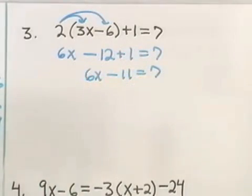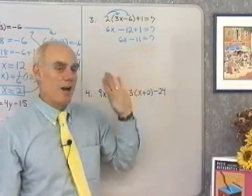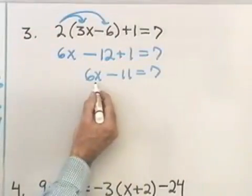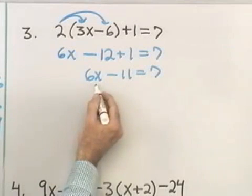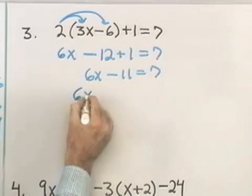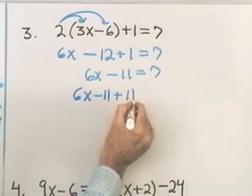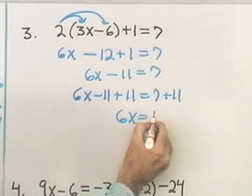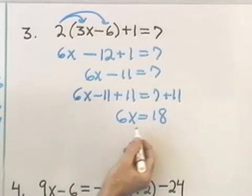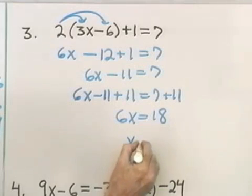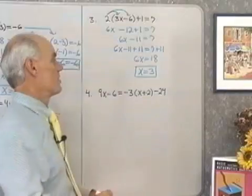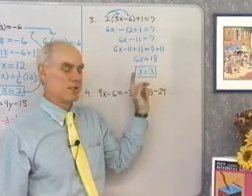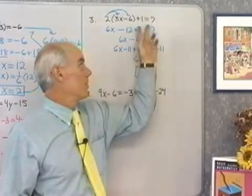It took 3 lines to simplify both sides as much as possible. I don't want to use the addition or multiplication property until I've simplified each side as much as I can. Now I'll isolate x: all variable terms on the left, constant terms on the other side. 6x minus 11, so I add 11 to both sides. 6x equals 18. Multiplying both sides by 1/6, x equals 3. This will check if substituted back into the original equation.